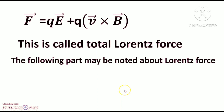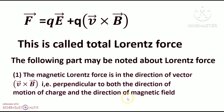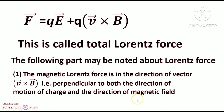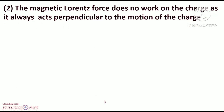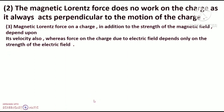The following points may be noted about Lorentz force: The magnetic Lorentz force is in the direction of vector V cross B, that is, perpendicular to both the direction of motion of the charge and the direction of the magnetic field. The magnetic Lorentz force does no work on the charge, as it always acts perpendicular to the motion of the charge.